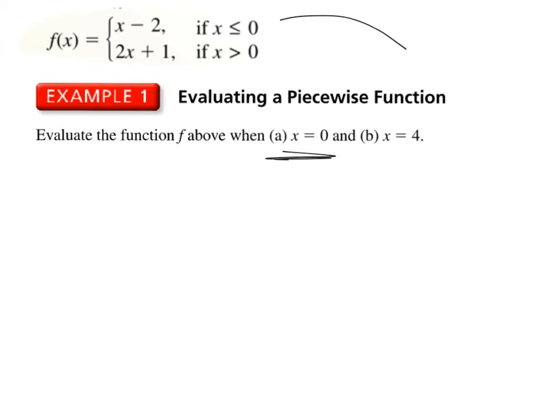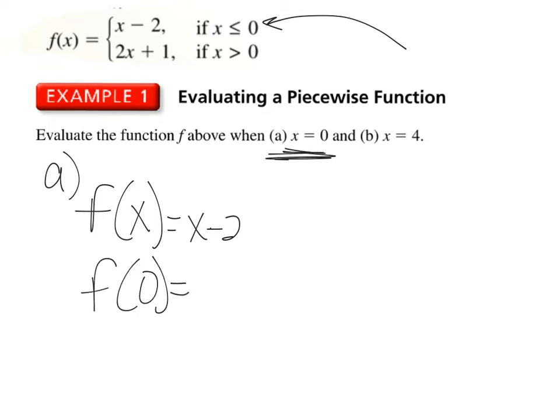So we look at our function, and we look at part a. And we want to know when x equals 0. Well, if x is 0, that means we're going to use the top function, f of x equals x minus 2. And all we do is plug in 0. So f of 0 gives us 0 minus 2, which is negative 2. So f of 0 is negative 2.